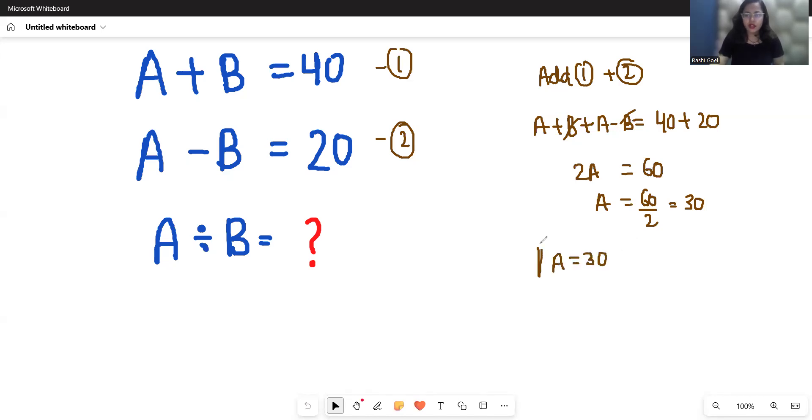Now find the value of B. Substitute in any of the equations, so 30 minus B equals 20. Therefore B equals 10. Now A divided by B, so 30 divided by 10 is 3.